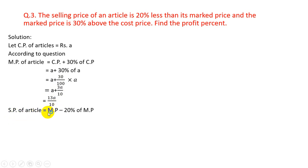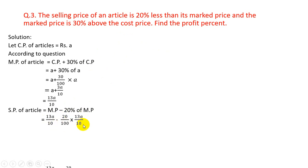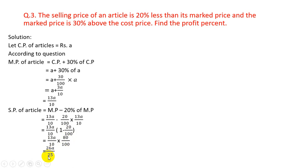SP of article = MP − 20% of MP, since the discount percent is 20%. So SP = 13A/10 − 20/100 × 13A/10 = 13A/10 × (1 − 20/100). Taking LCM gives (100 − 20)/100 = 80/100, so SP = 13A/10 × 80/100 = 1040A/1000 = 26A/25.